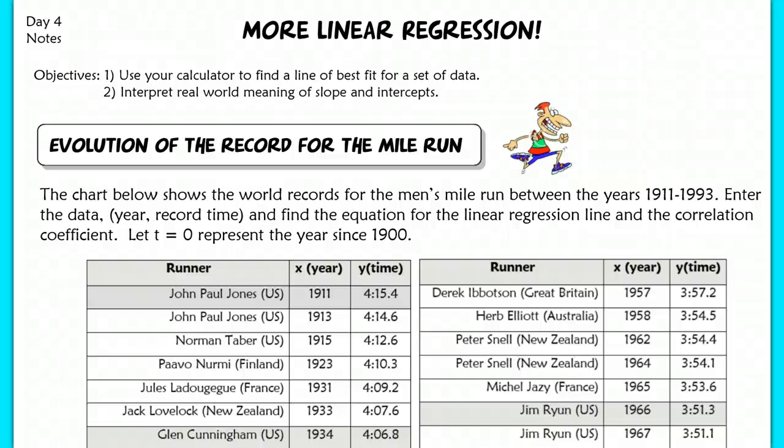Hello! This lesson is day four, and we're going to do more linear regression. We're going to do one problem, and this problem is a little bit tougher than the other problems just because the starting part where you have to determine your ordered pairs is going to be slightly trickier. So I've got a word problem here that is actually real data. It's the evolution of the record for the mile run for the men's world record.